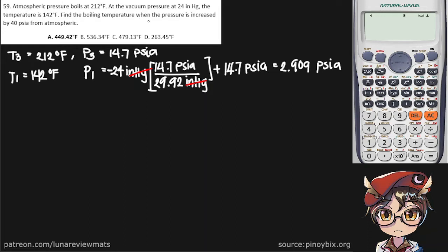Find the boiling temperature, let's call that T2. Find the boiling temperature when the pressure is increased by 40 PSI A from atmospheric. So let's call that our P2, and it's simply saying that you're adding 40 PSI to atmospheric, which should give us 54.7 PSI A.